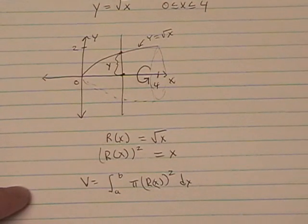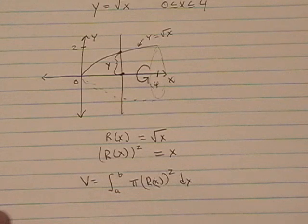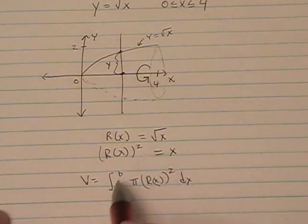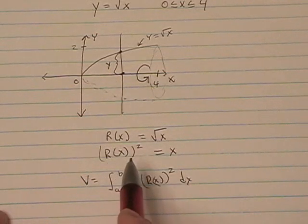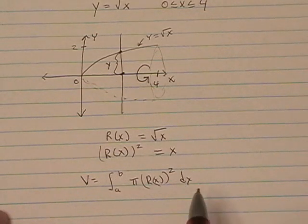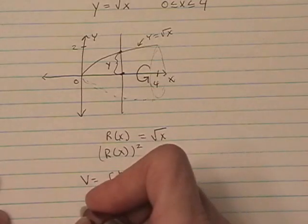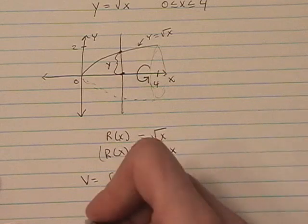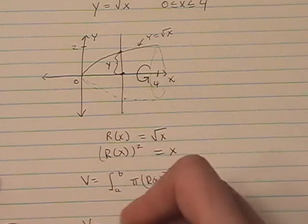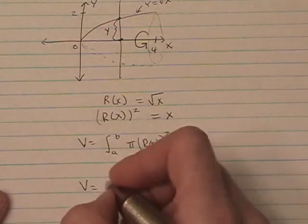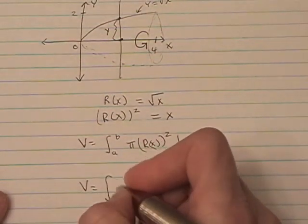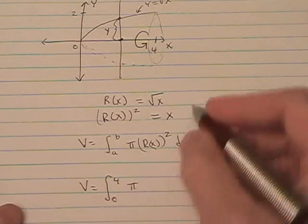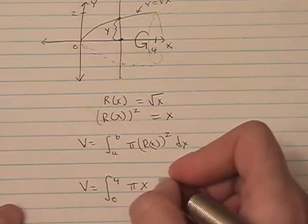r of x is the square root of x, our y value. When you square r of x, you get x. And we're going to plug our information into this formula. So we get v is equal to the integral from 0 to 4 of pi times x dx.